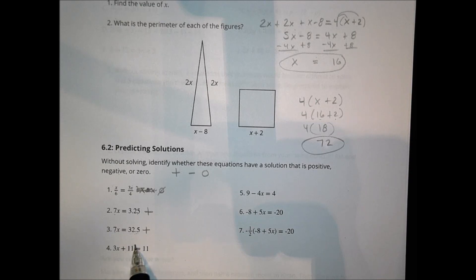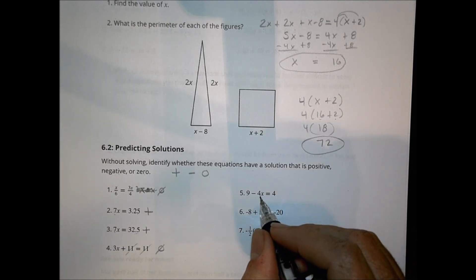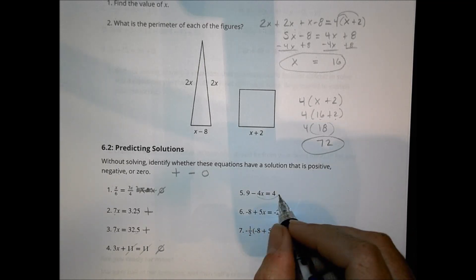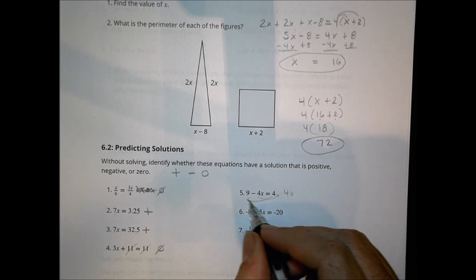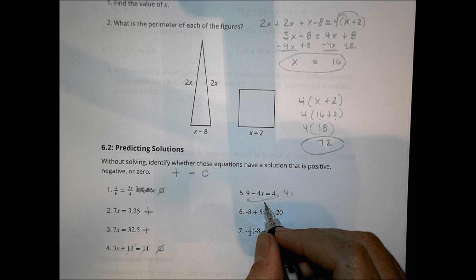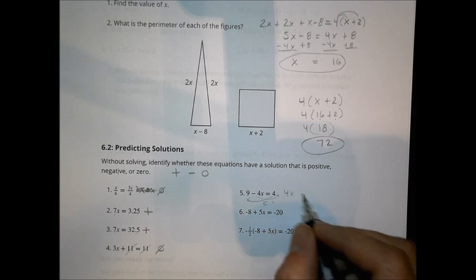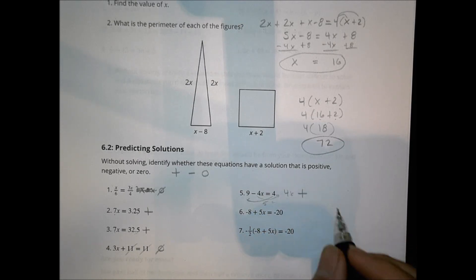For number 4, these 11s are going to cancel each other out, because I would subtract, I end up with 3x being equal to 0. So again, x is going to be equal to 0 in this case. Over here, if I was to put the 4 over there, thinking about that being a 4x over there, and put this 4 over there, then 4x is going to be equal to 5, and that's going to be a positive solution there for number 5.